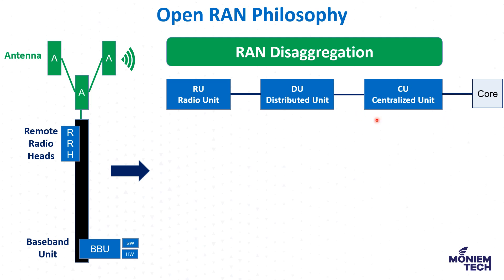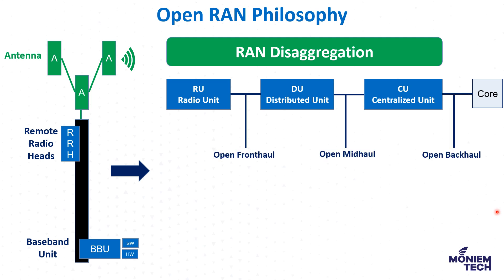The CU can be placed on-site or remotely and handles multiple nodes, simplifying the network architecture and improving reliability. There are also transport interfaces — new terms like open fronthaul, open midhaul, and the traditional open backhaul. The open fronthaul connects the radio unit with the DU, open midhaul is between DU and CU, and backhaul is between CU and the core network.